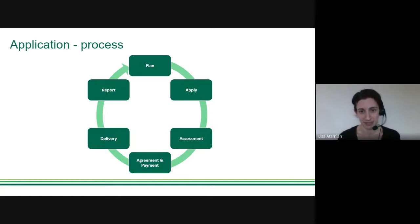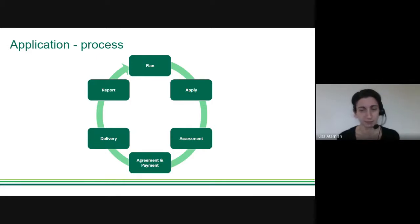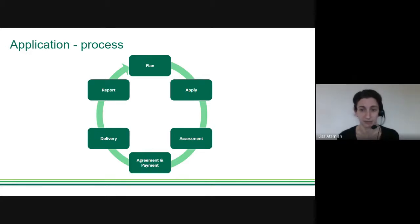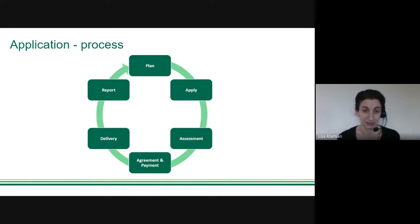In the assessment phase, once your application is submitted the grants team will process it, checking eligibility criteria and errors, and conducting due diligence checks on your submitted policy documents. Your application will then be passed to a team of trained volunteer assessors from both the council and the voluntary and community sector, who will score your application and meet as a grants panel to make funding decisions. Note that we always receive more applications than we can fund.